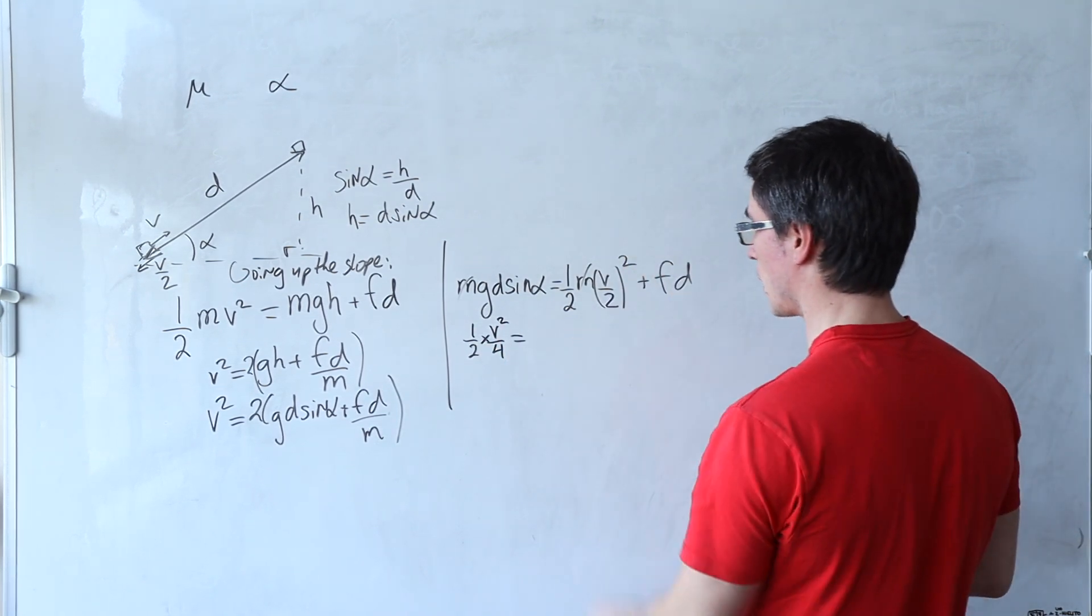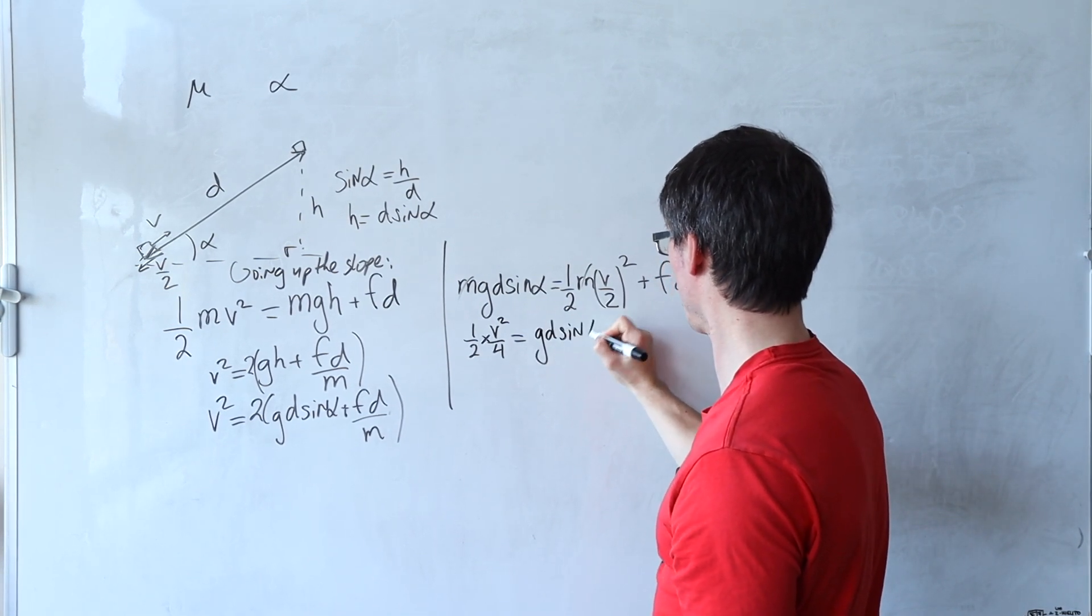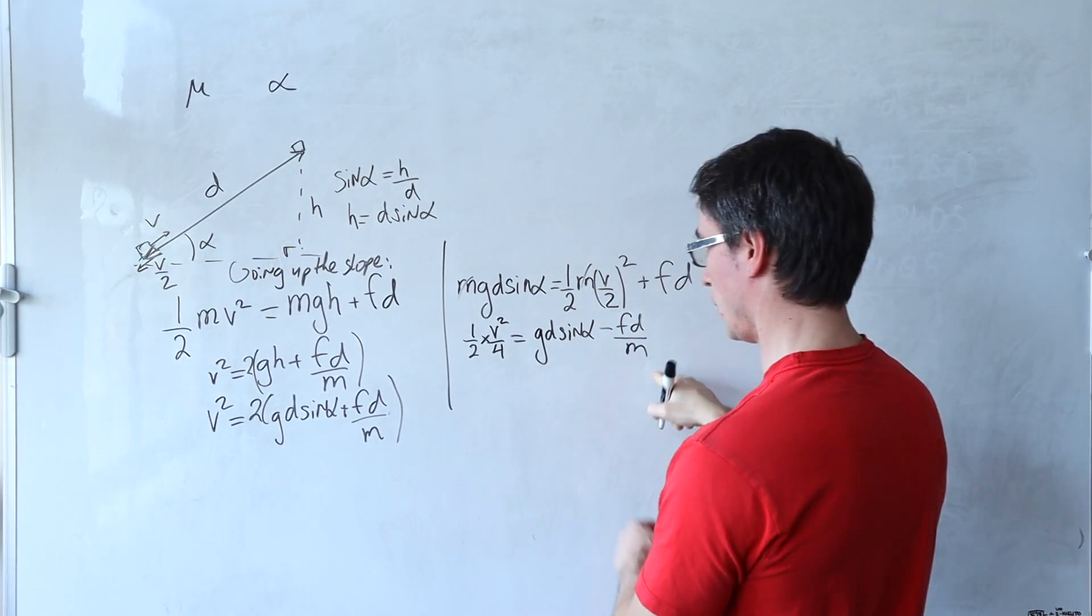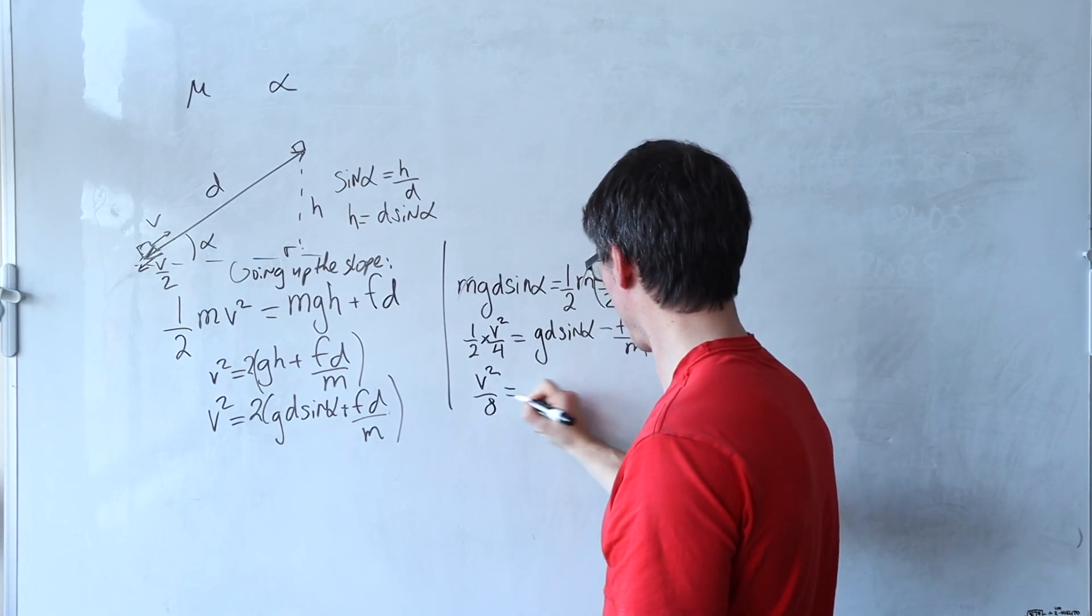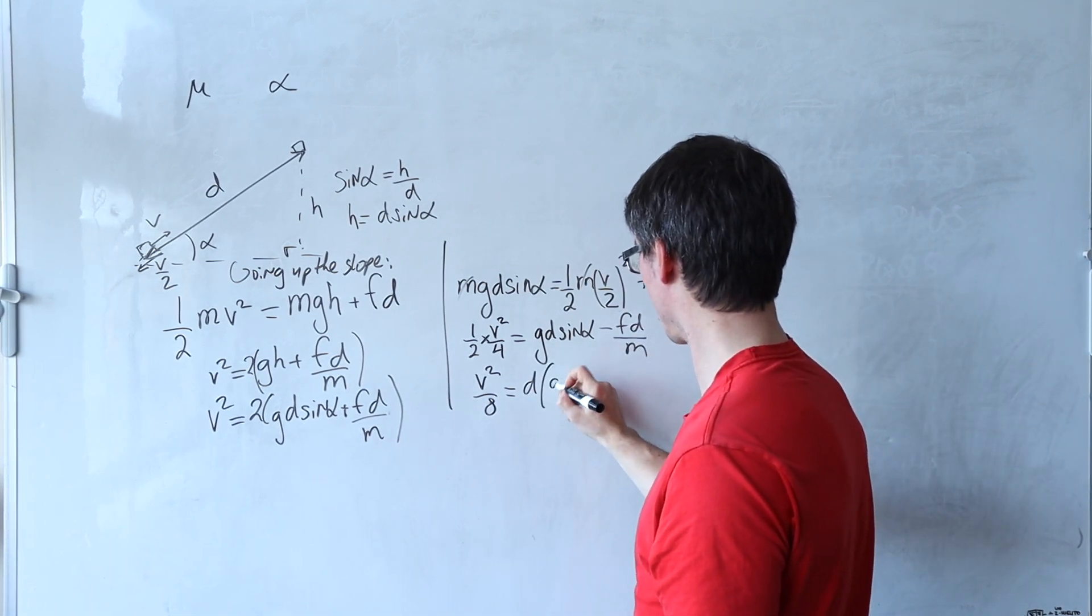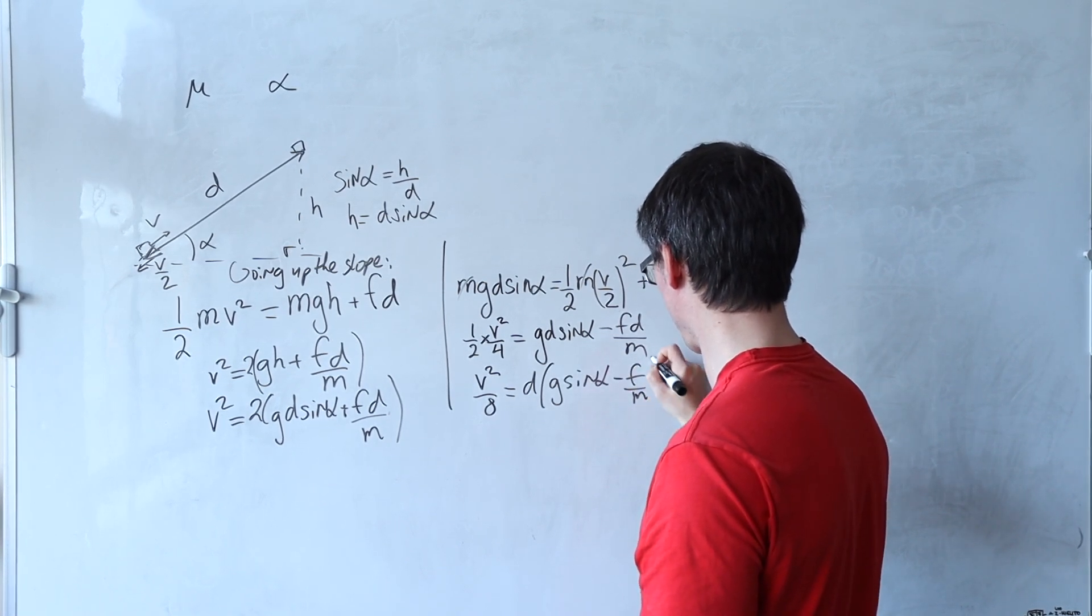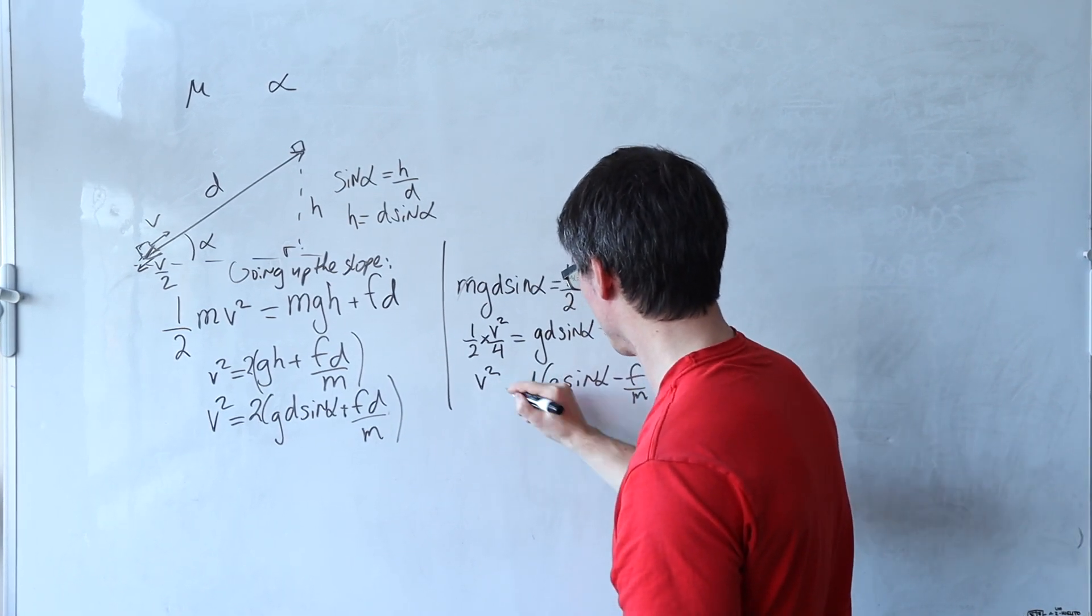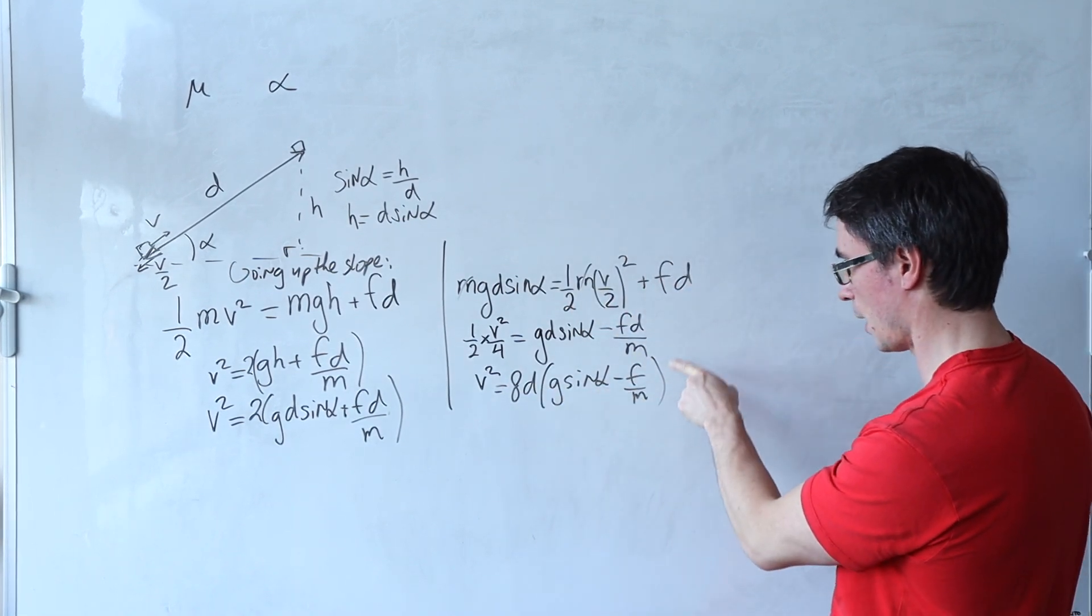V squared is going to give me g d sine alpha minus fd and I've divided by m. So on the left hand side we're going to get v squared over 8 is equal to, shall we take a factor of d outside of the brackets? So this here will give me g sine of alpha take away f over m. Meaning that v squared will be equal to 8 multiplied by that distance d g sine alpha take away f over m.